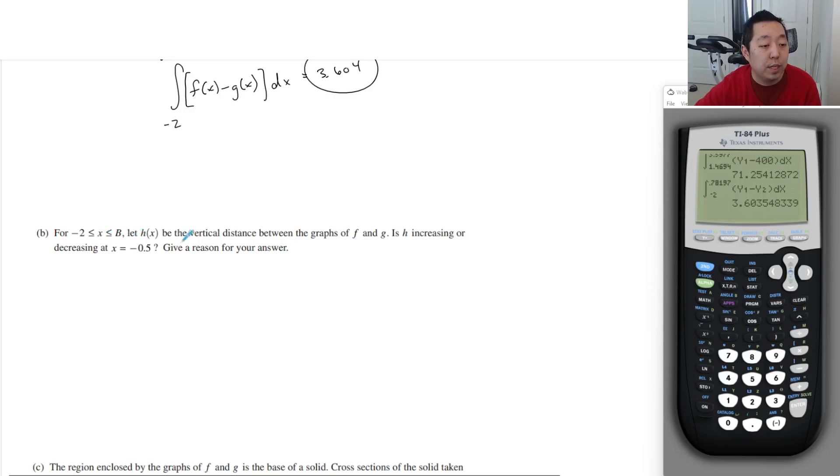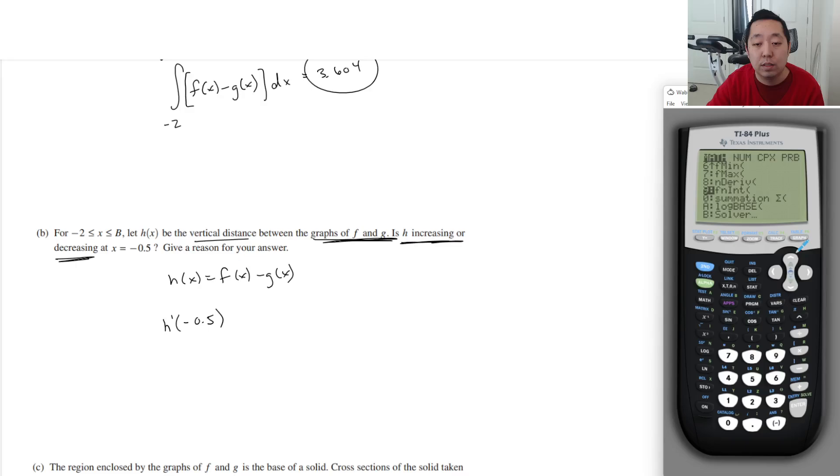For negative two less than or equal to x less than or equal to b, let h of x be the vertical distance between the graphs f and g. Is h increasing? The vertical distance between the graphs f and g is always top minus bottom. So h of x equals f of x minus g of x. They're asking if h is increasing or decreasing. That means I want to know if h prime of negative 0.5 - the derivative of the thing to find if it's increasing or decreasing. I'll take the derivative and decide if it's positive or negative. We're going to do derivative of y1 minus y2 over negative 0.5. I get negative 0.6. That is less than zero, so it is decreasing because h prime of negative 0.5 is less than zero.